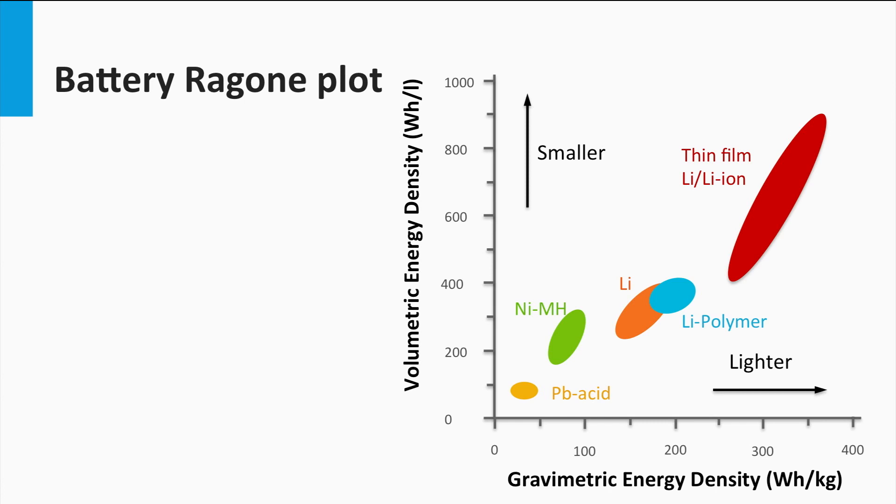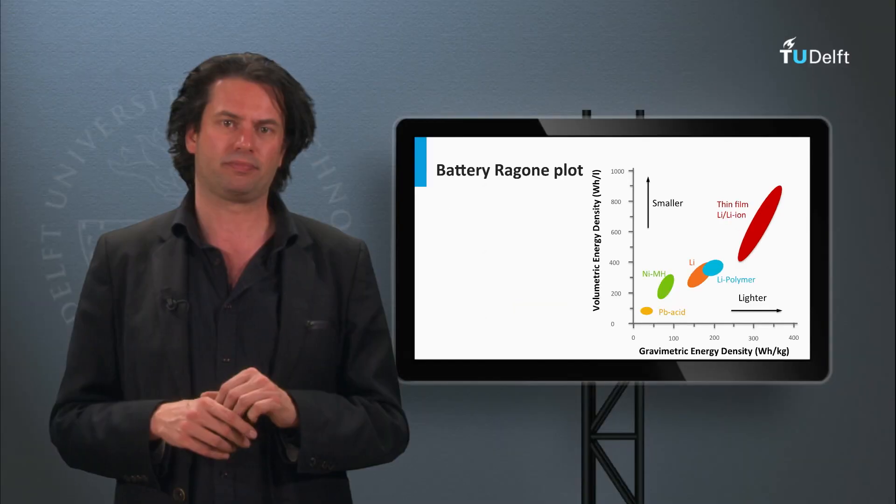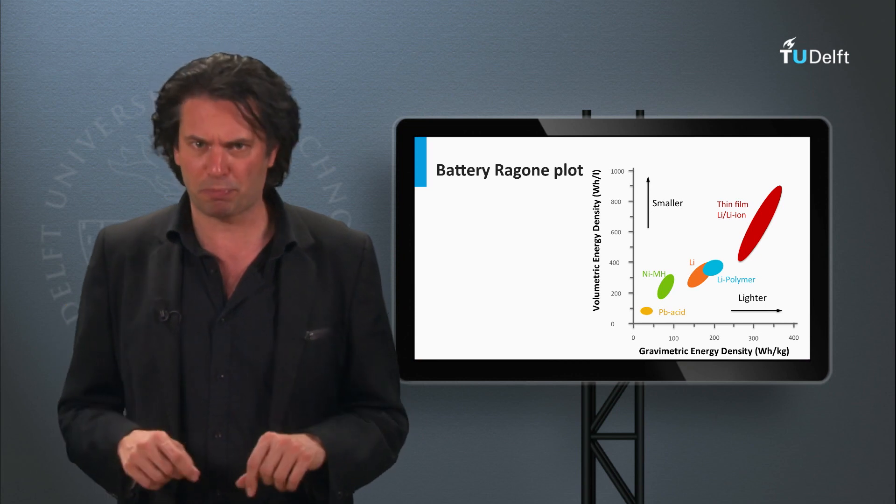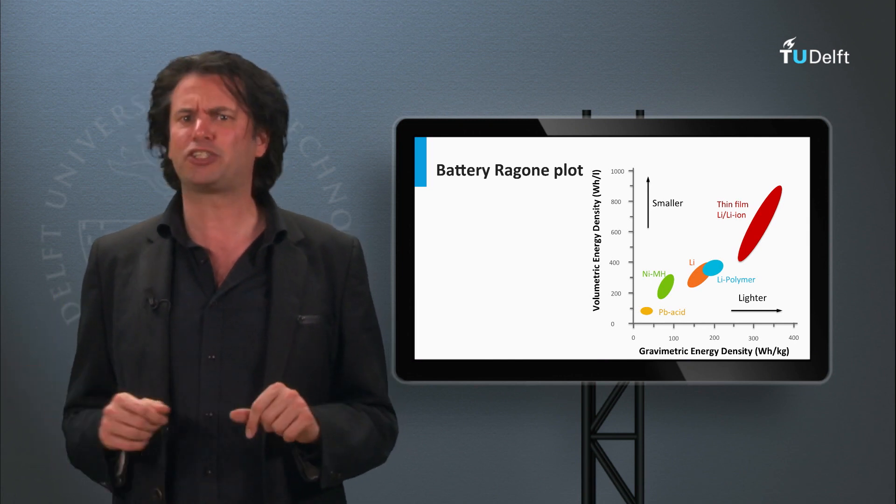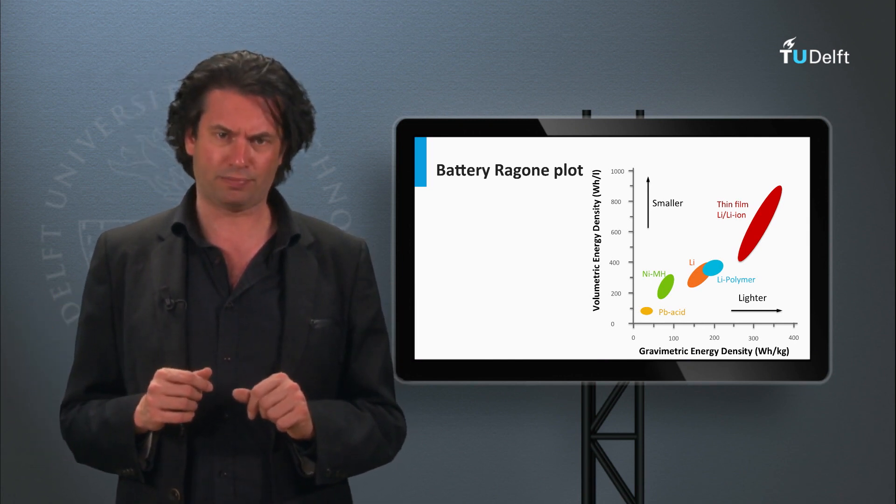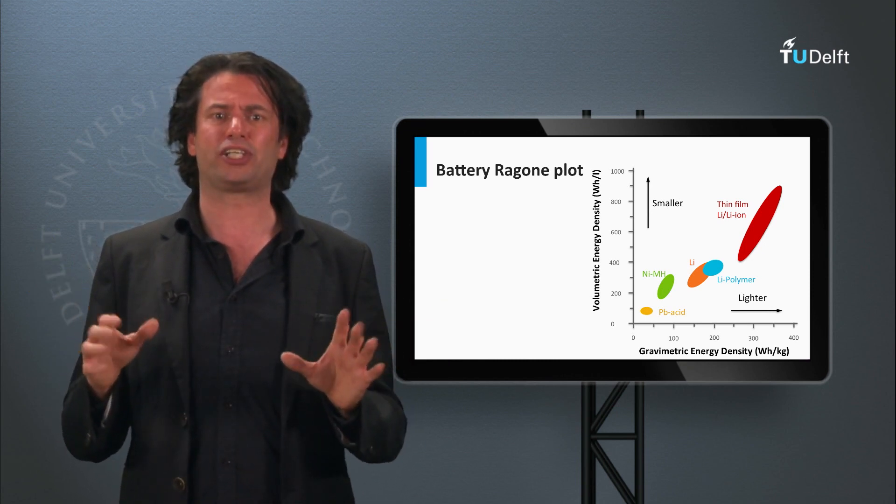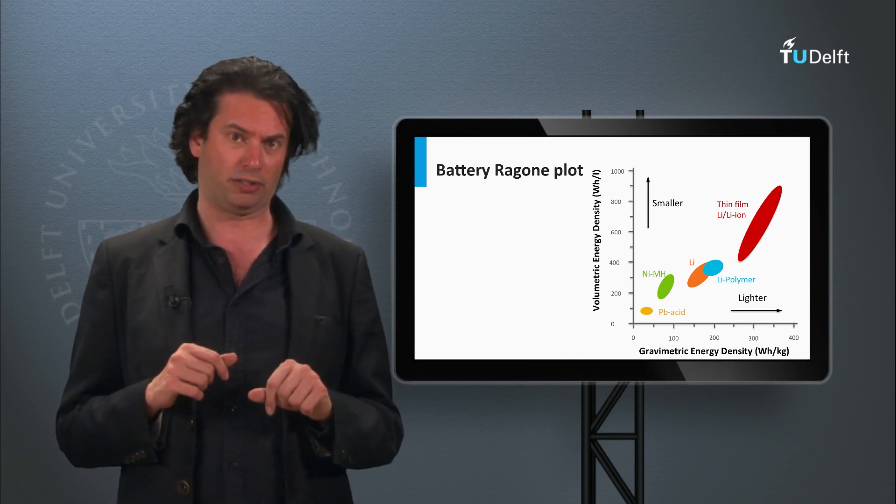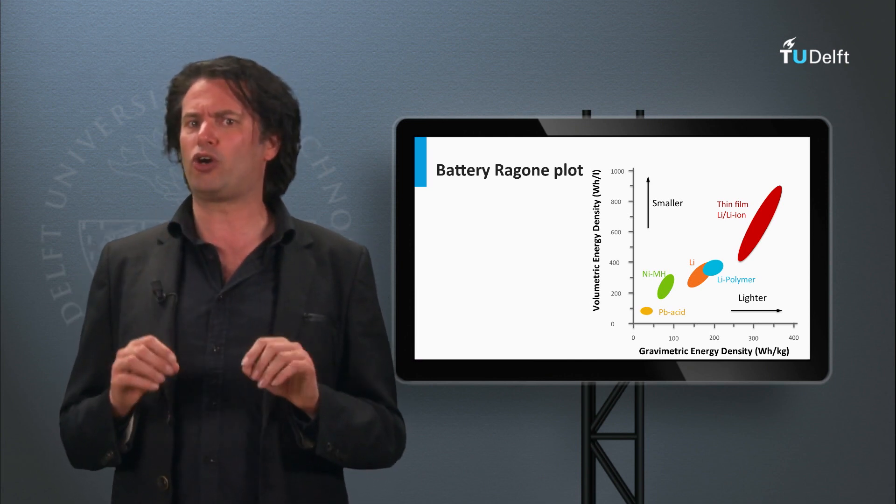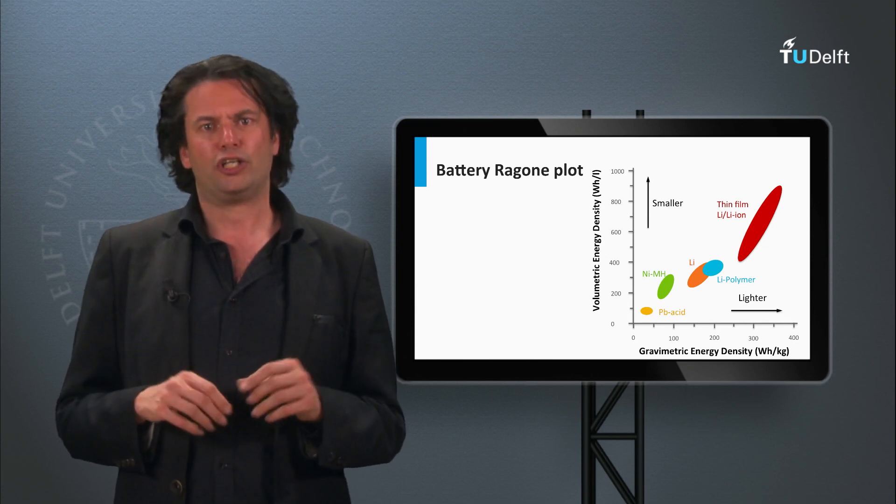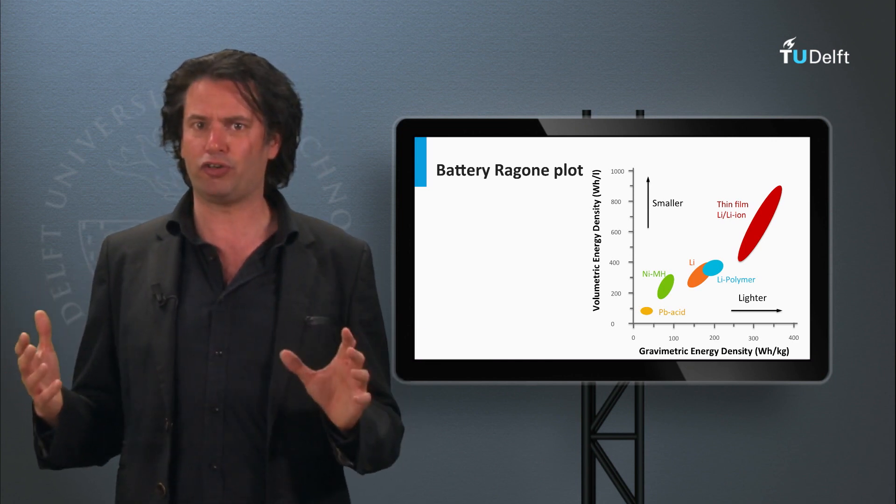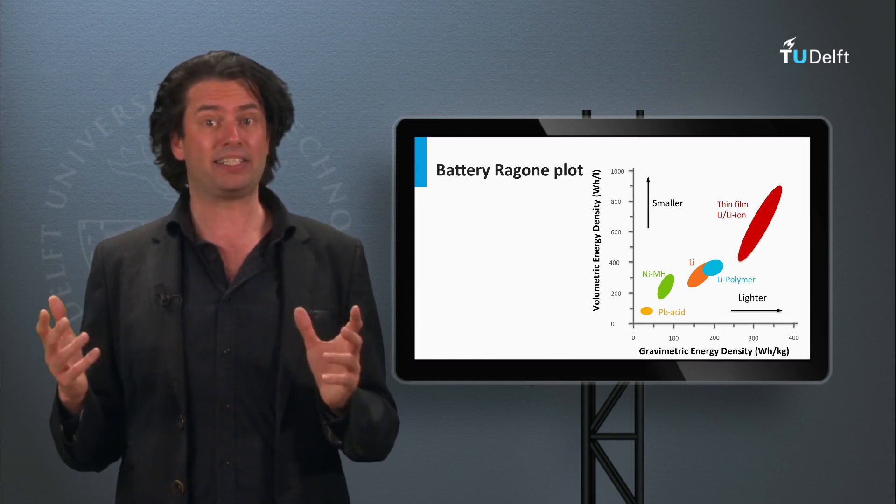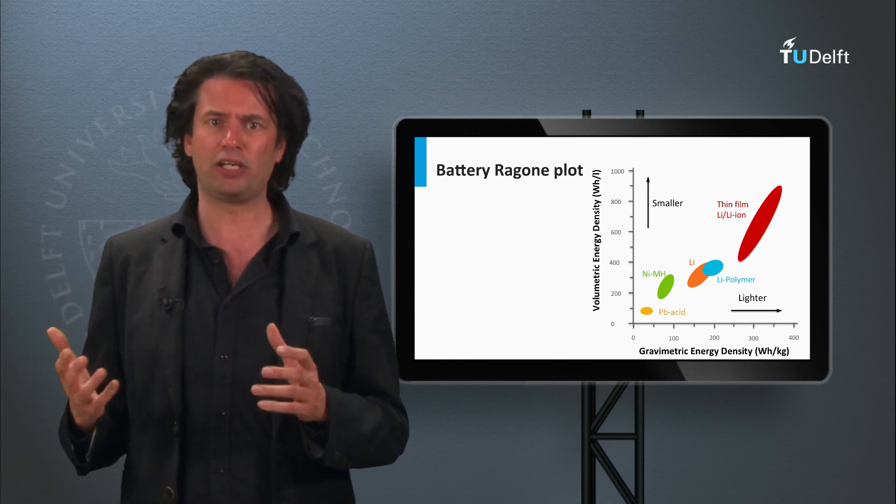As seen, lead acid shows the lowest volumetric and gravimetric energy densities among the batteries. Lithium ion batteries show ideal material properties to make it an optimal storage choice. Redox flow batteries have shown a lot of promise in their research phase so far. However, redox flow batteries and lithium ion technologies are still being heavily researched upon. Consequently, these technologies are also very expensive. Due to the unbeatable maturity and low cost of the lead acid batteries, they are still the storage technology of choice in PV systems, despite their much lower energy density and extremely low cycle life.